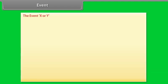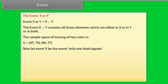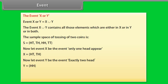The event X or Y equals X union Y. The event X union Y contains all those elements which are either in X or in Y or in both. The sample space of tossing two coins is S = {HT, TH, HH, TT}. Let event X be 'only one head appears': X = {HT, TH}. Let event Y be 'exactly two heads': Y = {HH}. The event X union Y = {HT, TH, HH}.